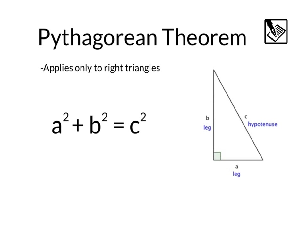This is a theorem that applies to all right triangles. We call the short sides of a right triangle the legs, and we reference them with the variables a and b. The long side, across from the right angle, we represent with c, and it's known as the hypotenuse. Whenever you have a right triangle, you can set up the equation a squared plus b squared equals c squared.